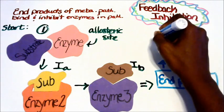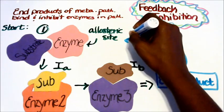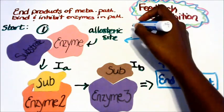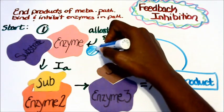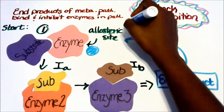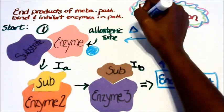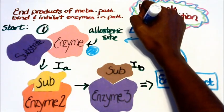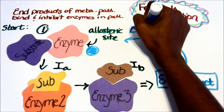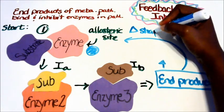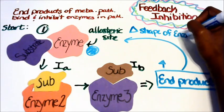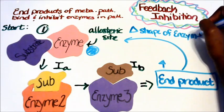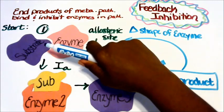Well, the end product can then bind to the allosteric site. When it binds to the allosteric site, the shape of the enzyme changes. So there's a change in shape of the enzyme.